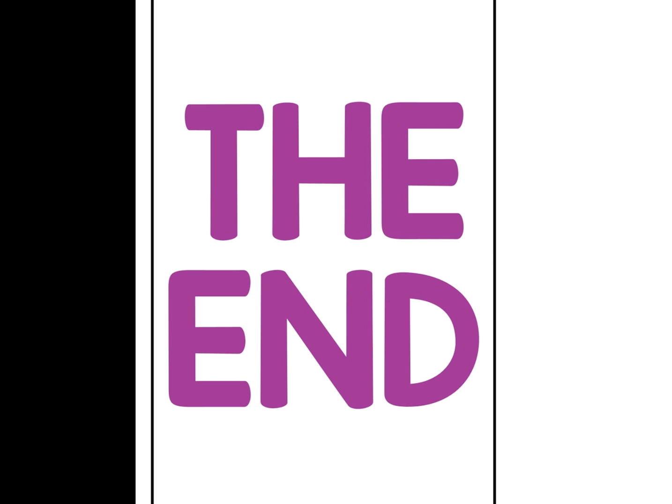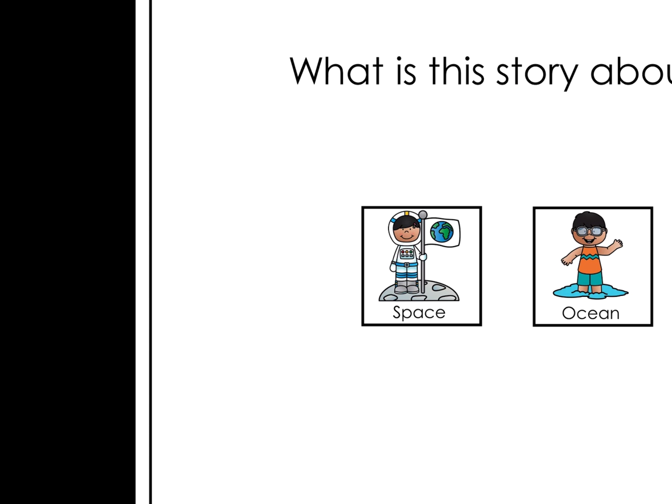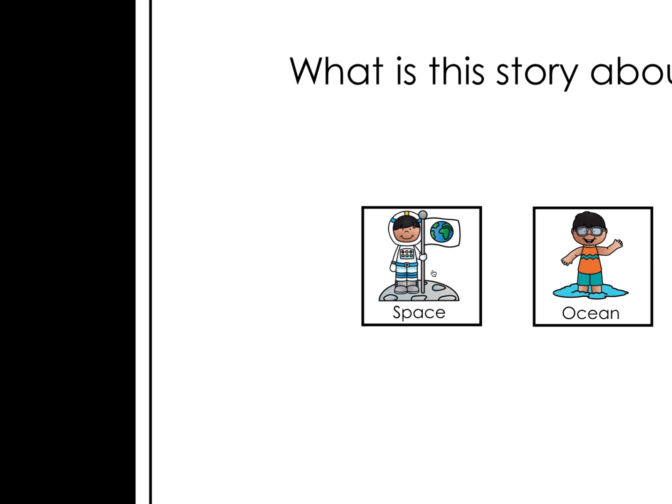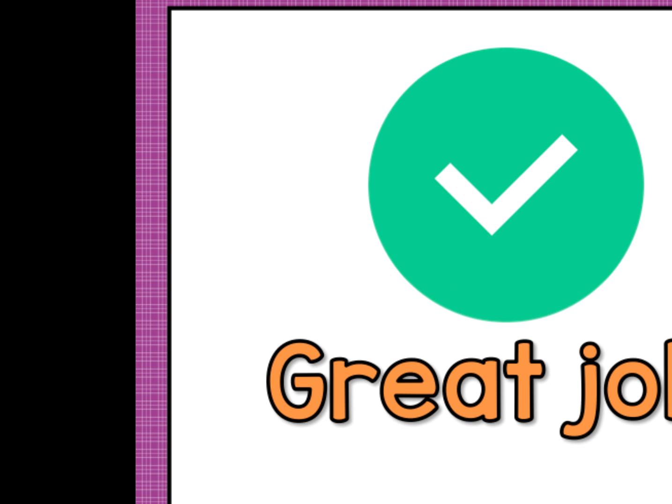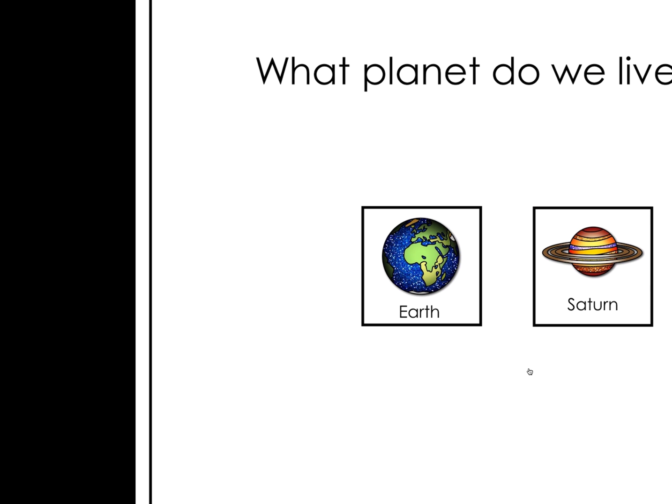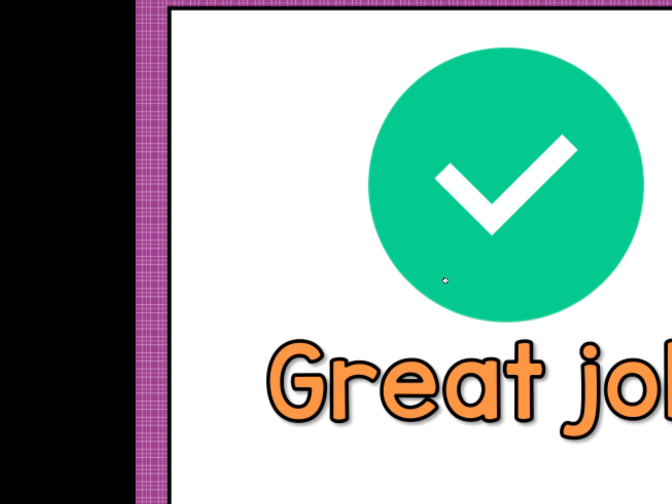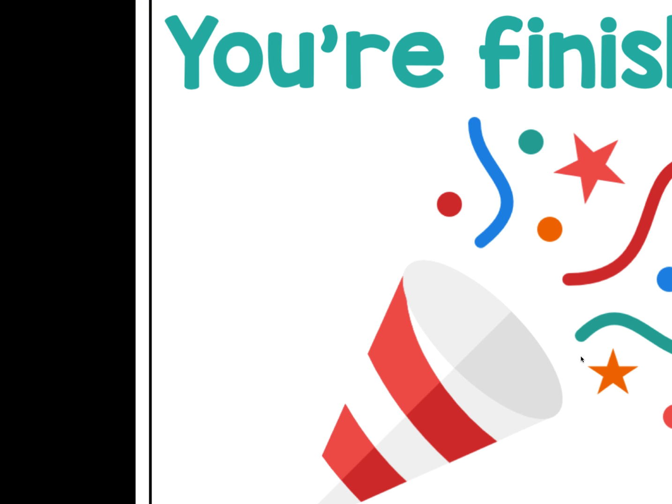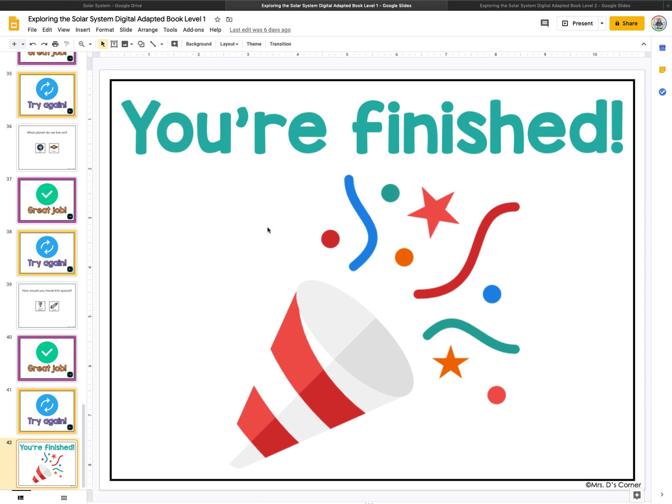At the end you'll click the arrow to go to the next page and then they have the comprehension questions. What is this story about? This story is about space. If they were to click the incorrect answer again, it's going to prompt them to try again. When they click the correct answer it's going to give them the great job response and move to the next question. At the end it says you're finished and then they can exit the presentation.